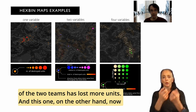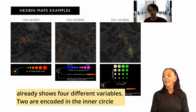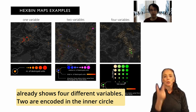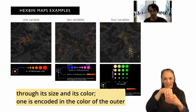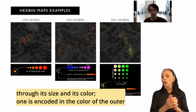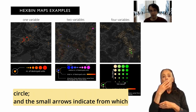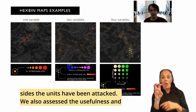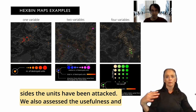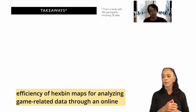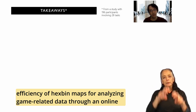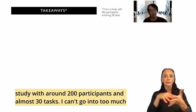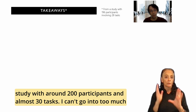And this one, on the other hand, now already shows four different variables. Two are encoded in the inner circle through its size and its color. One is encoded in the color of the outer circle. And the small arrows indicate from which sides the units have been attacked. We also assessed the usefulness and efficiency of hexpin maps for analyzing game-related data through an online study with around 200 participants and almost 30 tasks.